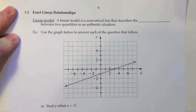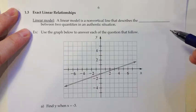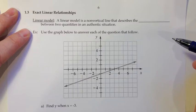Section 1.3: Exact Linear Relationships. In this section we're going to start looking at using straight lines to model real life situations. So we're going to start off with the definition here, which is a linear model. A linear model is a non-vertical line that describes the relationship between two variables in an authentic situation.